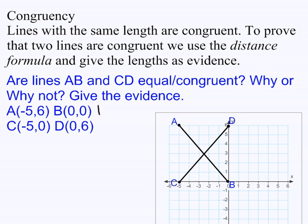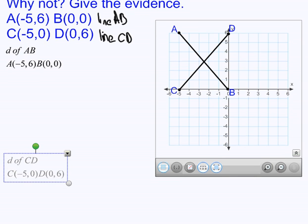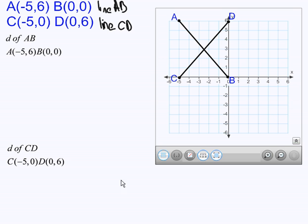So we have line AB here and line CD. The only way that you can prove that line AB and line CD with these coordinates here are congruent is if you show that the lengths are the same. And one way to show that the lengths are the same is by using the distance formula. So you can find the distance of AB and the distance of CD and show that the lengths are the same.